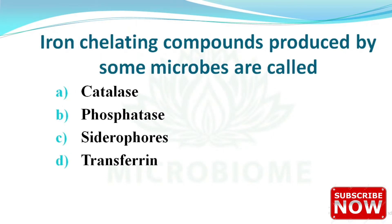Next: iron-chelating compounds produced by some microbes are called what? The options are catalase, phosphatase, siderophores, and transferrin. The right answer is option C — siderophores. Siderophores primarily scavenge iron but also form complexes with other essential elements such as molybdenum, manganese, cobalt, and nickel in the environment.